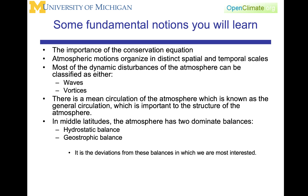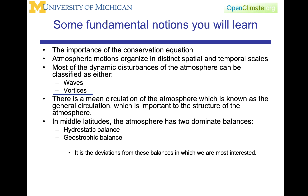Atmospheric motions organize in distinct spatial and temporal scales — they don't occur randomly. We have things like hurricanes, tornadoes, and mid-latitude cyclones. Most of the dynamical disturbances of the atmosphere can be classified either as waves or vortices. There is a mean circulation known as the general circulation, which is important to the structure of the atmosphere — where it's hot, where it's cold, is very strongly related to dynamics.